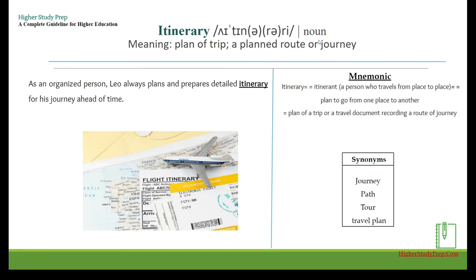Itinerary — it's a noun which means a plan of a trip, a planned route or journey. For example, as an organized person, you always plan and prepare a detailed itinerary for your journey ahead of time. The mnemonic: remember it via 'itinerant,' a person who travels from place to place — translating into a plan to go from one place to another. Synonyms: journey, path, tour, travel plan.